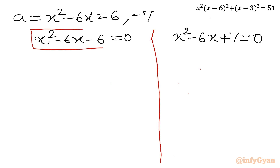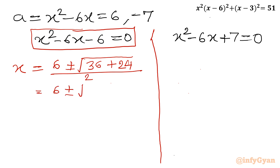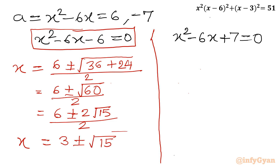Applying the quadratic formula to the first equation x² minus 6x minus 6 equals 0: x equals minus b, so 6, plus or minus the square root of b² which is 36, minus 4ac which is minus 24 — so plus 24 — all divided by 2. That gives 6 plus or minus √60 divided by 2. Further, √60 equals √(4×15) equals 2√15, so this becomes 6 plus or minus 2√15 over 2, giving x equals 3 plus or minus √15. These are 2 real solutions.